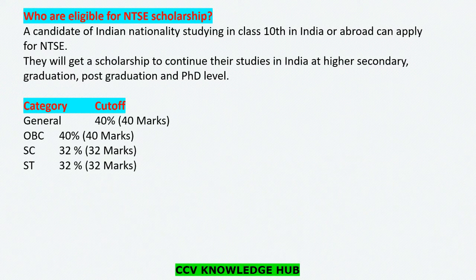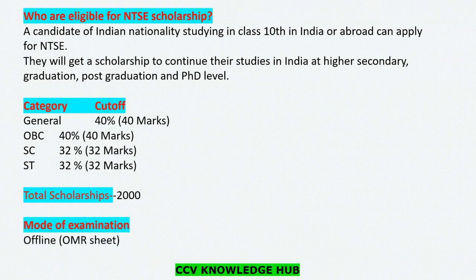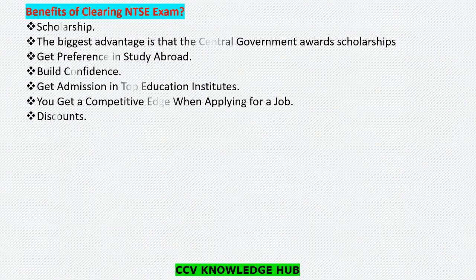Regarding category cutoffs: the general category requires a minimum of 40 percent marks, OBC category also 40 percent (it may vary), SC requires 32 percent, and ST has its own cutoff. In total, approximately 2000 or more scholarships are provided. The mode of examination is offline using an OMR sheet.